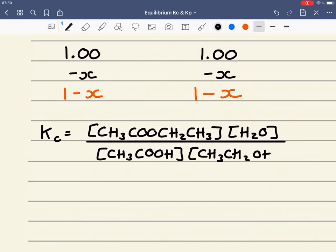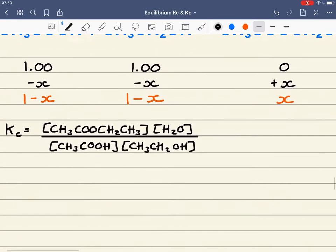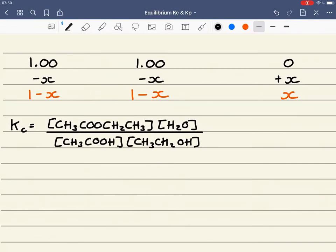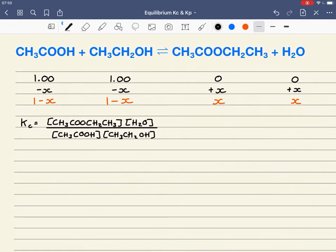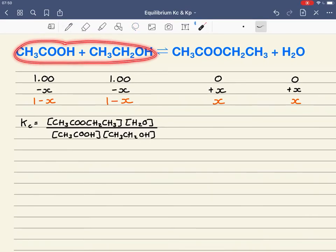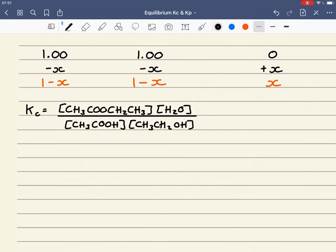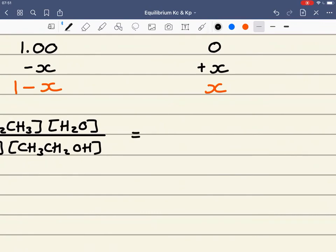And we can see, again, my Kc expression requires me to work out concentrations. And here we've got moles, but again, because we've got the same number of moles, 2 moles of reactant, 2 moles of product, the volume terms will cancel, and I can use moles as well as concentration here. That's all equal to 4.